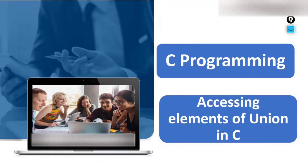Hello and welcome. Today the topic of discussion is accessing elements of a union in C. Like we have understood how to access members of structures in C, in a similar fashion, after studying union, we'll understand how to access members or elements of union in C language. I have already covered this in my previous example, but let's have a brush-up.